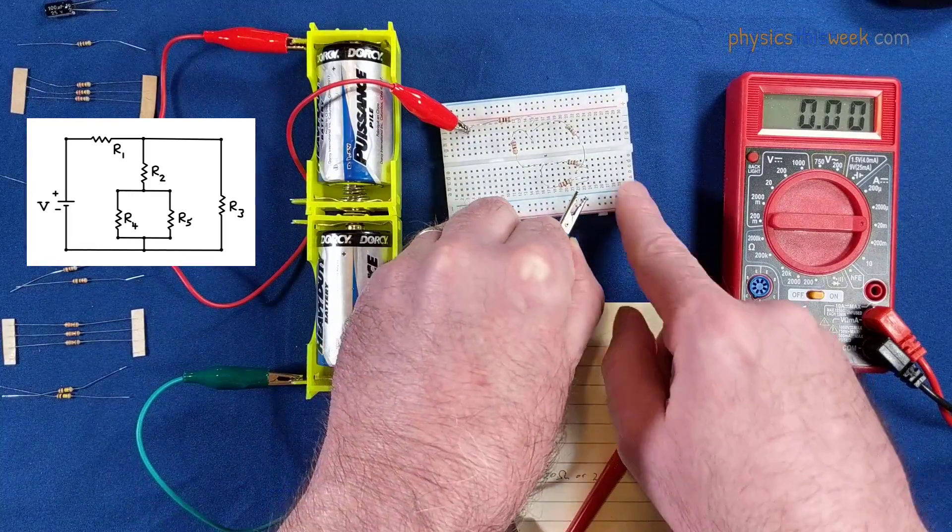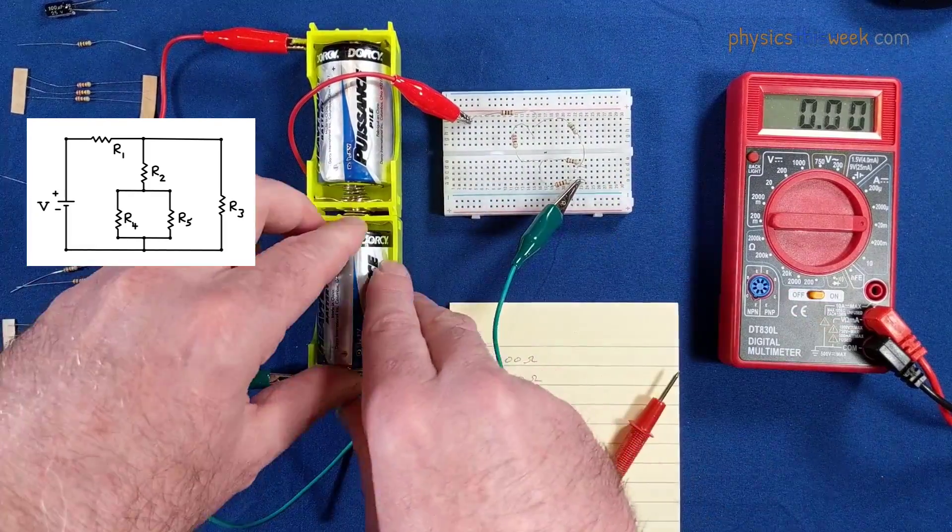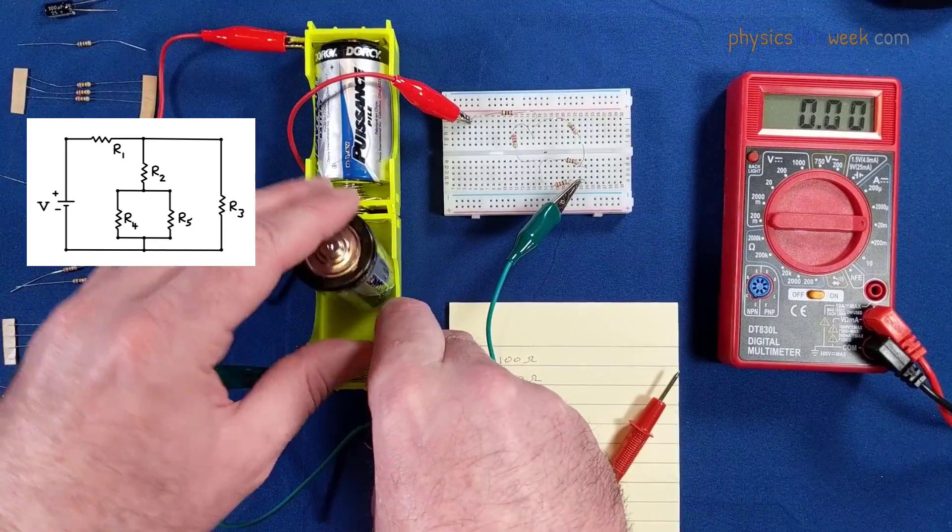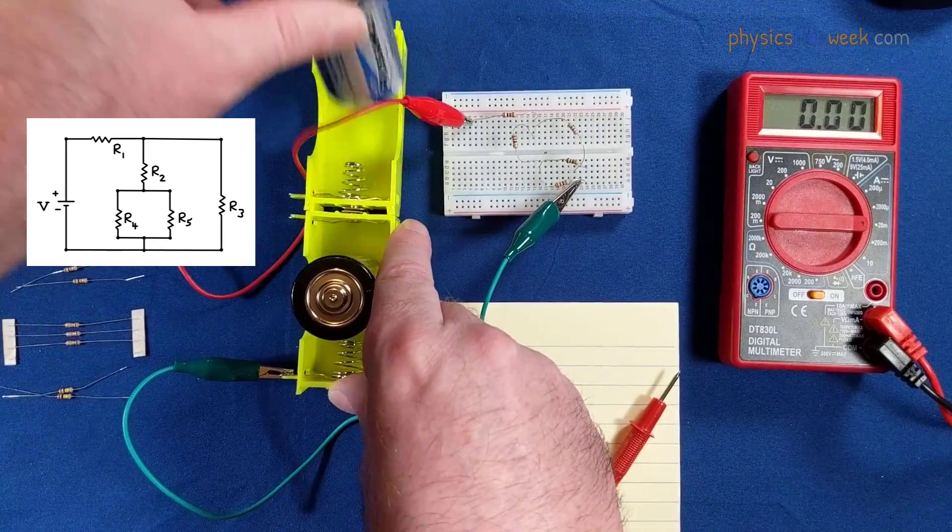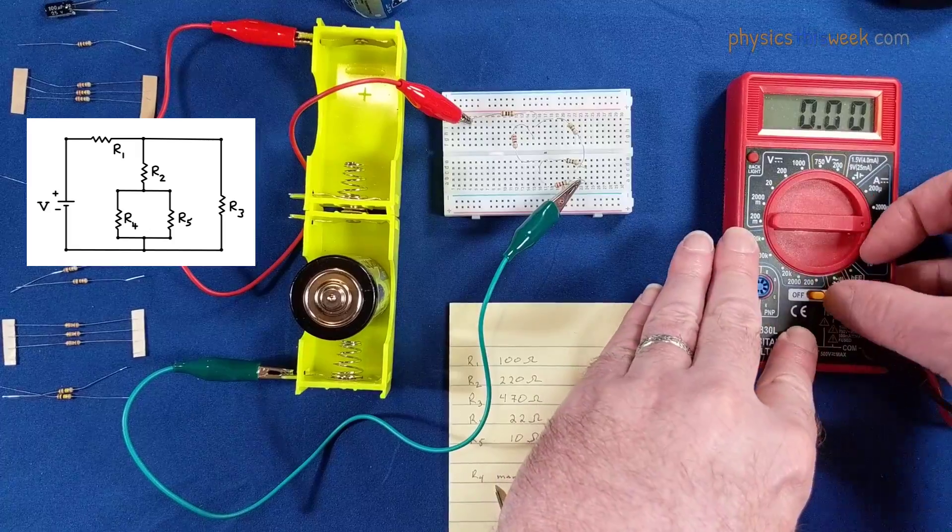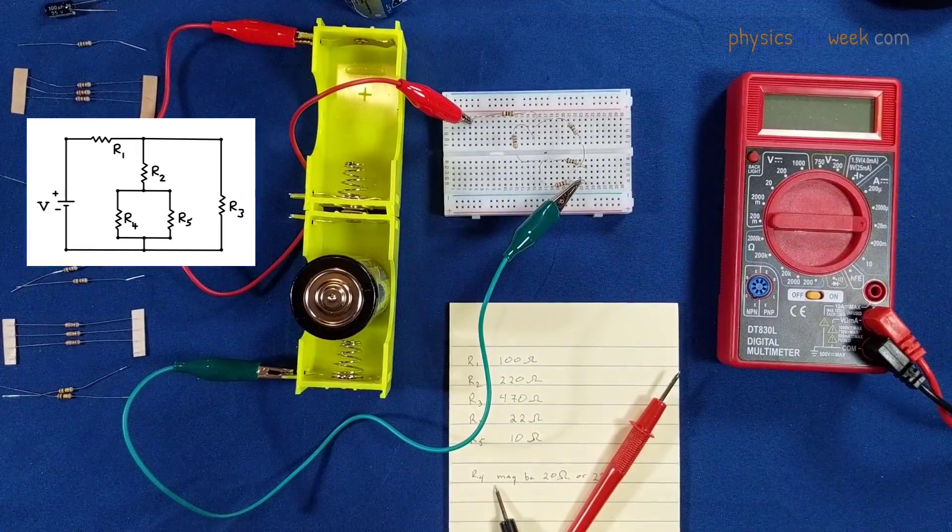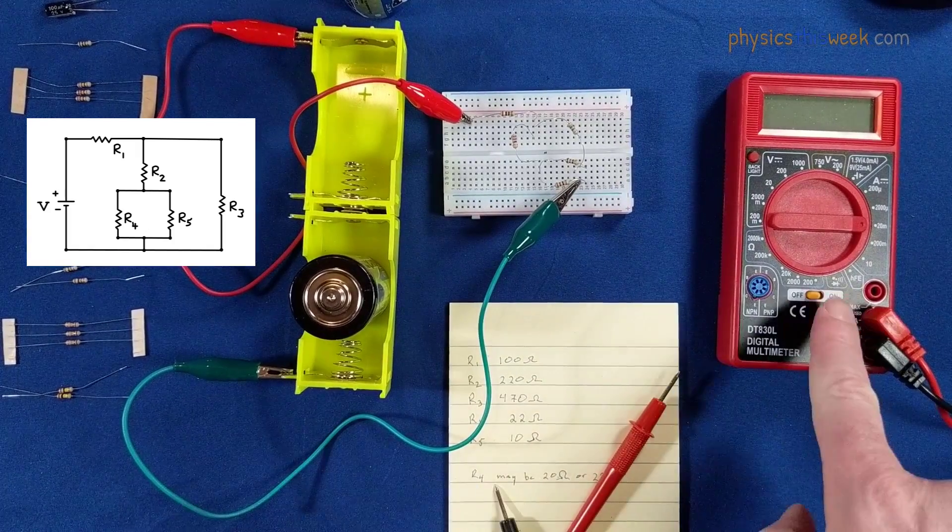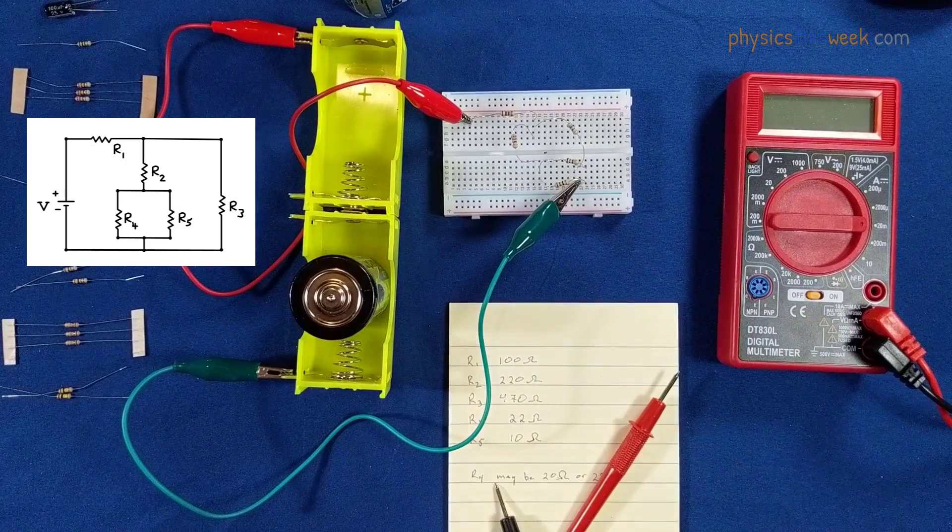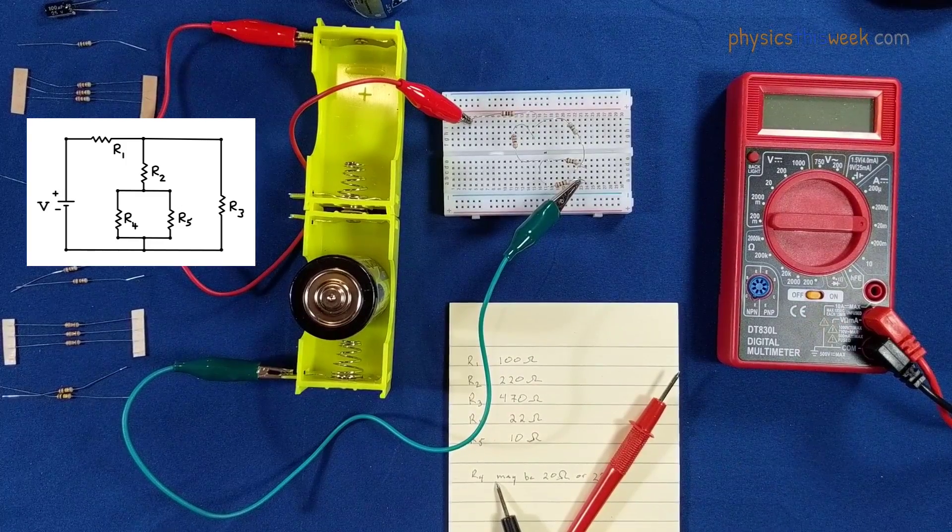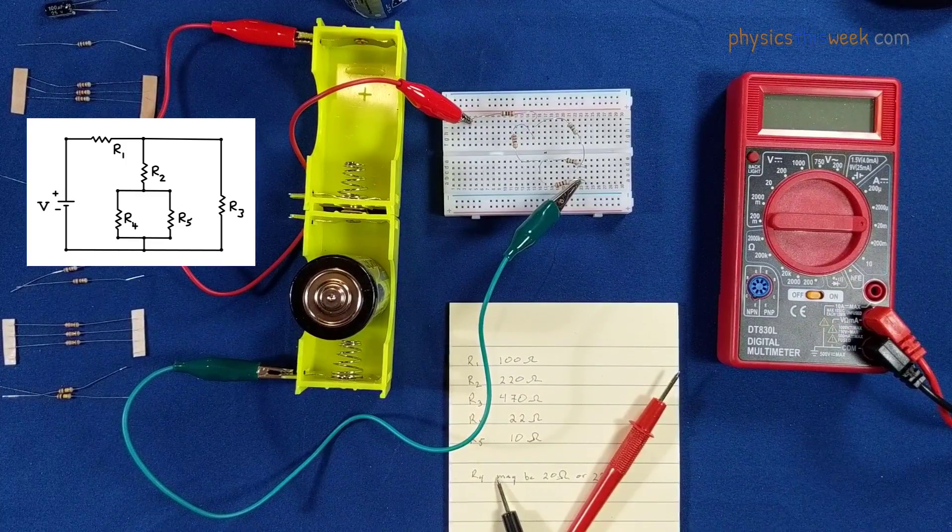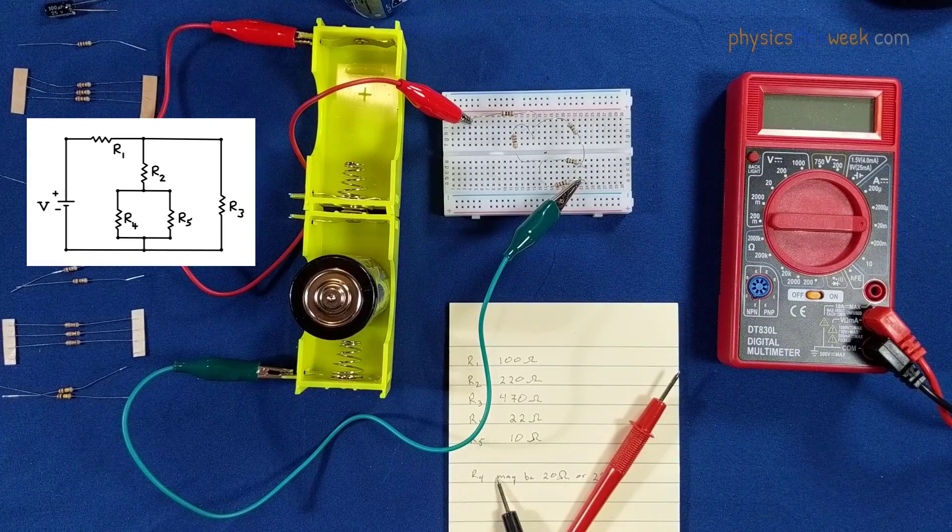As always, at the end of these, make sure that you disconnect your battery and make sure you turn off your multimeter. These things will run down if you let them turn on. So that is the series-parallel combination circuit. Good luck with writing up your lab report.